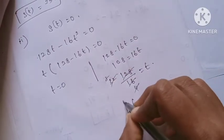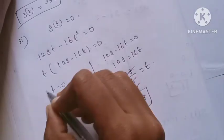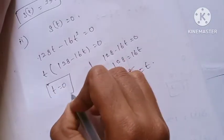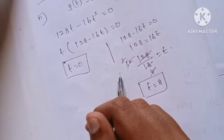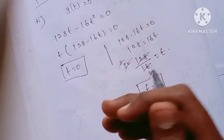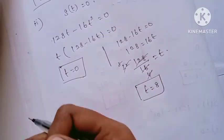128 divided by 16 equals 8. So t equals 0 or t equals 8. T equals 0 is the initial position, so t equals 8 seconds is when the particle hits the ground.